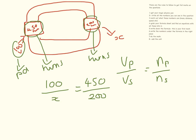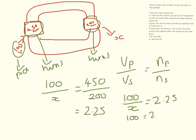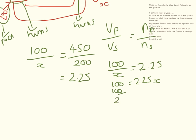There are a couple of ways you could look at doing this — you could rearrange it first or do the maths first. I like to do the maths first. So 450 divided by 200 equals 2.25. So what we have now is 100 divided by x equals 2.25. We take the x up, so 100 divided by 2.25 equals 44 volts.